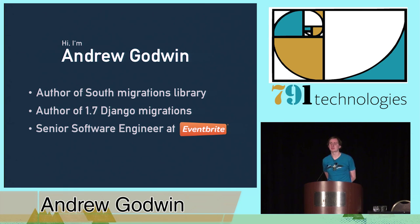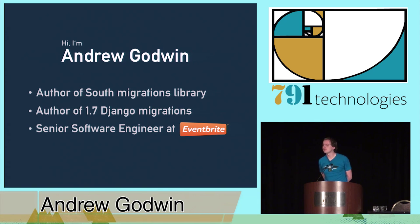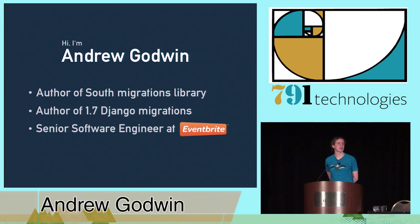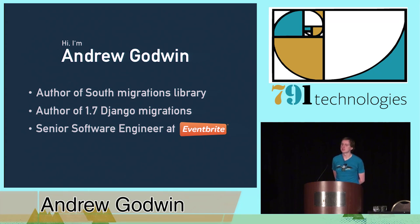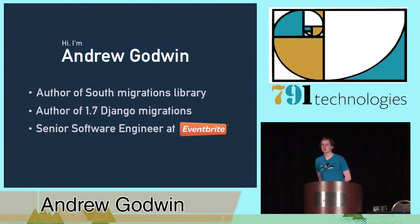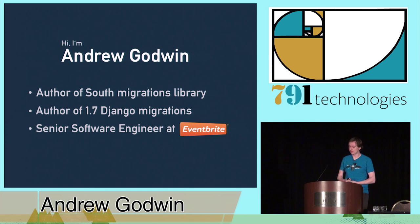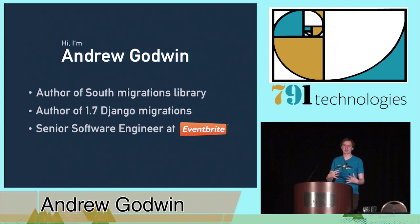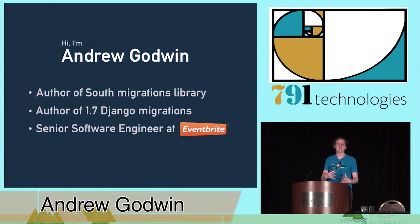What this talk is about is essentially the history of South: why it came about, how it developed, and then what became of the Django 1.7 migrations. More importantly, how those migrations were developed, what the design decisions were, how they're implemented, and the pitfalls and issues I came across. I want you to come away with an idea of how that stuff works and not be scared of migrations.